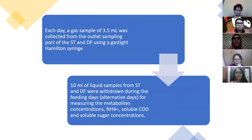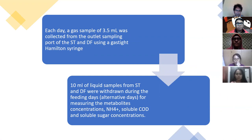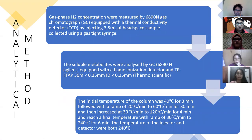For each day, a gas sample was collected from the outlet sampling port of the storage tank and dry fermenter using a gas-tight Hamilton syringe, and 10 mL of liquid sample from the storage tank and dry fermenter were withdrawn. The analytical method for the gas phase: hydrogen concentration was measured by thermal conductivity detector and gas chromatograph, and soluble metabolites were analyzed by GC equipped with a flame ionization detector.